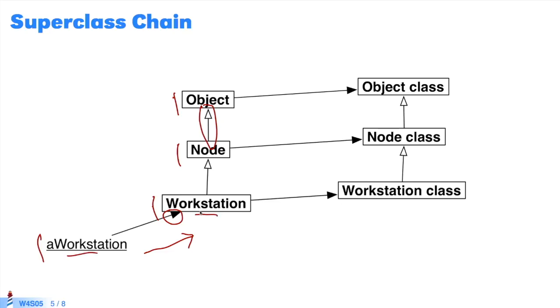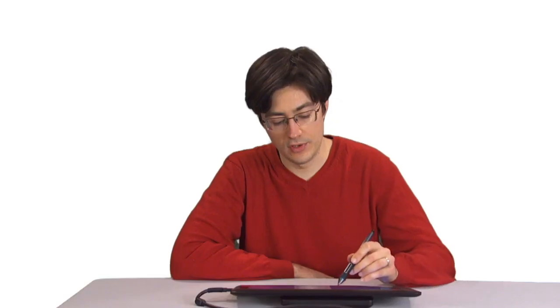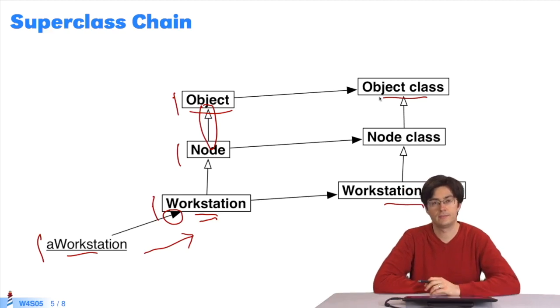A workstation is an instance of workstation. Workstation is an instance of workstation class. Likewise, object is an instance of object class.